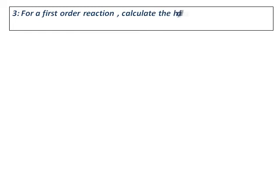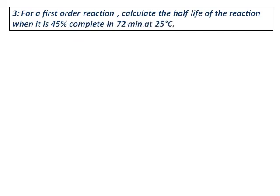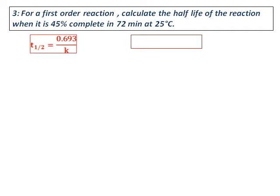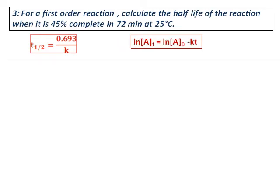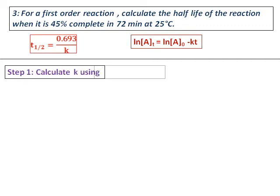We will do one more question. For a first-order reaction, calculate the half-life when it is 45% complete in 72 minutes at 25 degrees Celsius. They have asked for the half-life, so from the formula: t-half equals 0.693 divided by k. We just need the value of k, which we get by using the integrated first-order rate law: ln[A] equals ln[A₀] minus kt. So the first step is to calculate k.